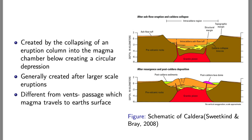Here's a schematic showing after the caldera collapse and after resurgence. This bottom one shows what happens over a period of time — you get a resurgent dome, which is the ground that collapsed basically bulging up again over time as the magma chamber refills. An example of that would be the Toba supervolcano. If you look up Lake Toba online, you'll see a lake with what looks like an island in the middle — that island is basically a resurgent dome.